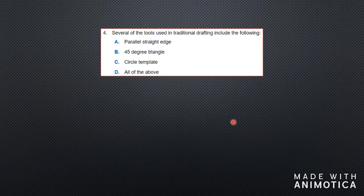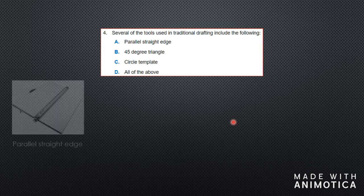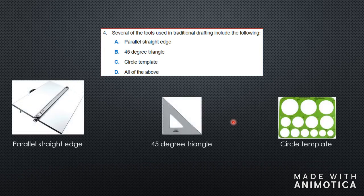Question four: several of the tools used in traditional drafting include the following — the parallel straight edge, 45-degree triangle, circle template, or all of the above. You can see all three tools here, and yes, we need all three of these tools if we are going to do traditional drafting. So the answer is all of the above.